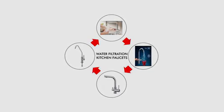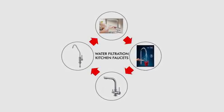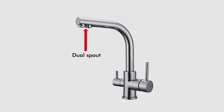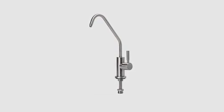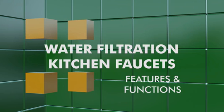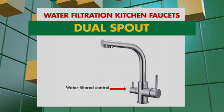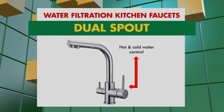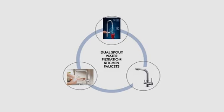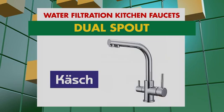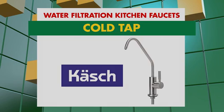Ang water filtration kitchen faucets na available sa Wilcon ay may dalawang klase: ang dual spout water filtration kitchen faucets, at ang cold top water filtration kitchen faucet. Ang dual spout water filtration kitchen faucets ay may dalawang kontrol — ang isa ay para sa filtered water control, at ang pangalawa ay para naman sa hot and cold water control. Available ito sa Grohe Red, Grohe Blue, at sa Cash brand. At ang cold top water filtration kitchen faucet naman ay available din sa Cash brand.